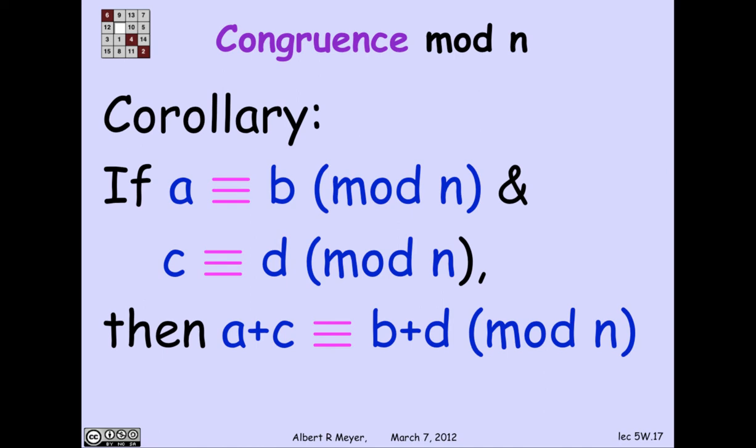So again, congruence is acting a lot like ordinary equality. If you add equals to equals, you get equals. And of course, the same fact applies to multiplication. If you multiply equals by equals, you get equals.